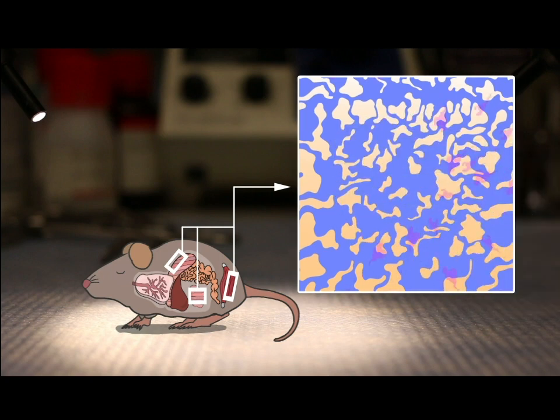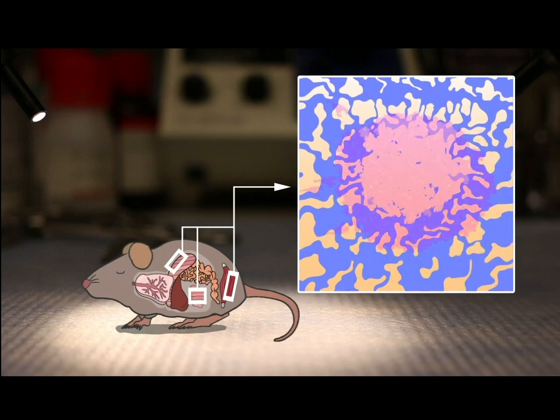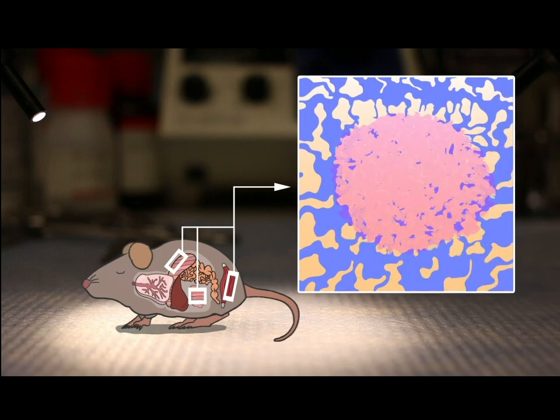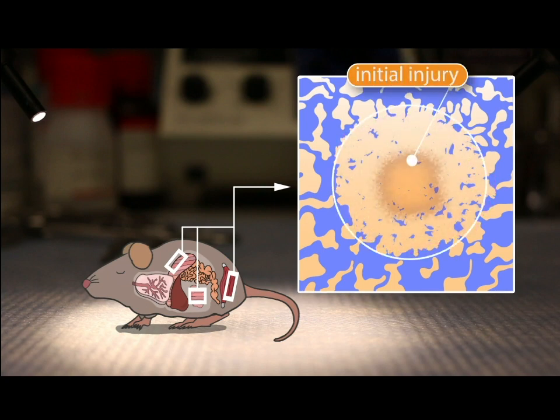This swarming activity led to collateral damage of the tissue and further extended the local disruption of tissue architecture produced by the initial insult.